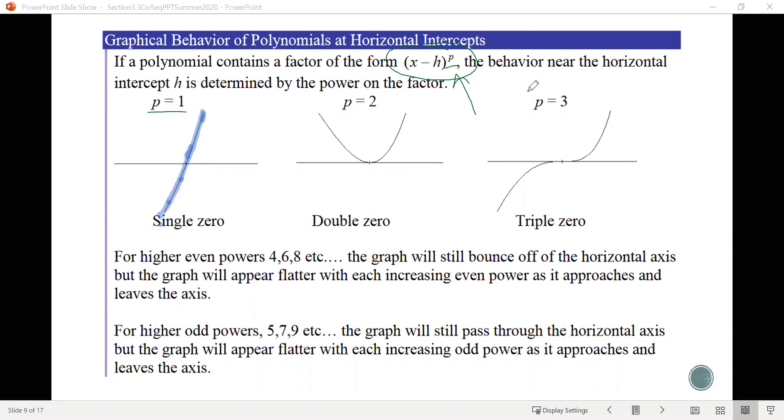If we have a multiplicity of 2, where the power then is 2, notice that what happens is that at that 0, the graph kind of bounces. It comes down, hits the graph, and then bounces off. Also note that here we have one that's bouncing from the top. It could actually also bounce from the bottom depending on the graph.